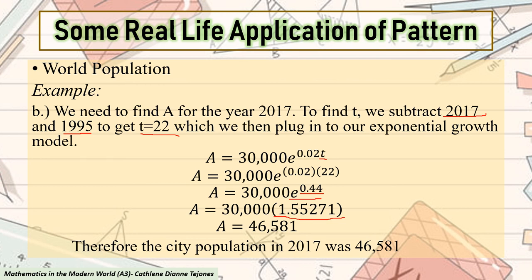But since there is no person whose value is decimal, we will get the whole number. We have our population as A = 46,581. Therefore, the city population in 2017 was 46,581.